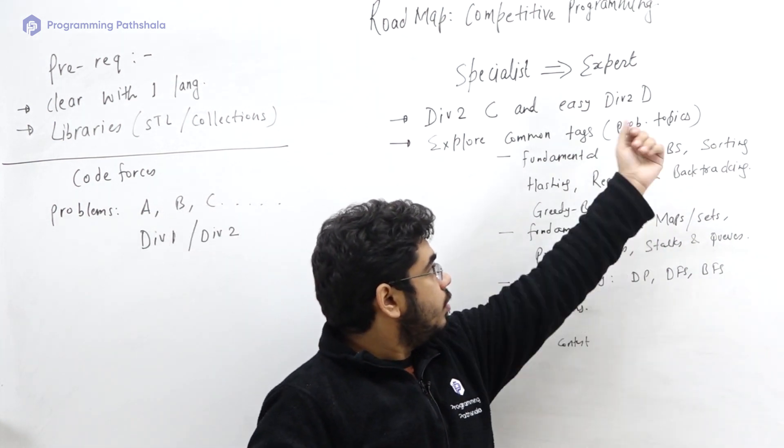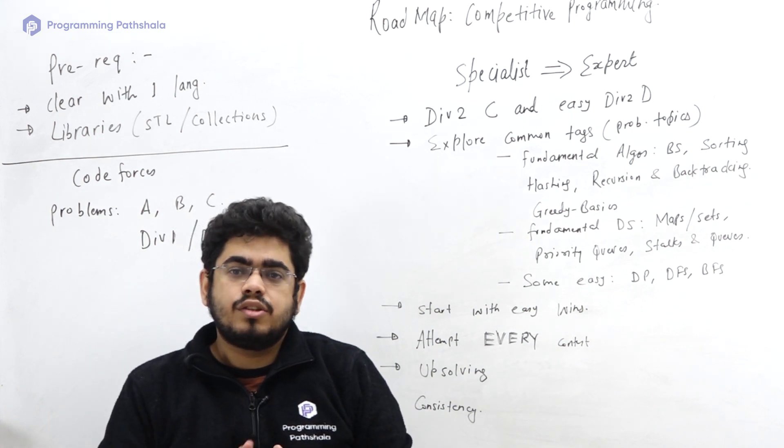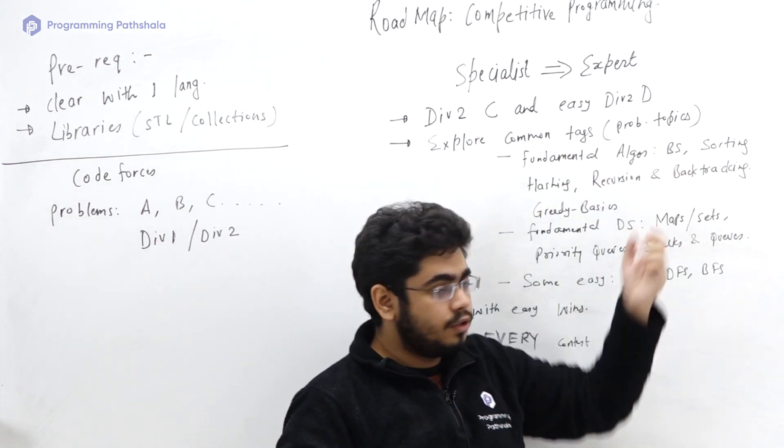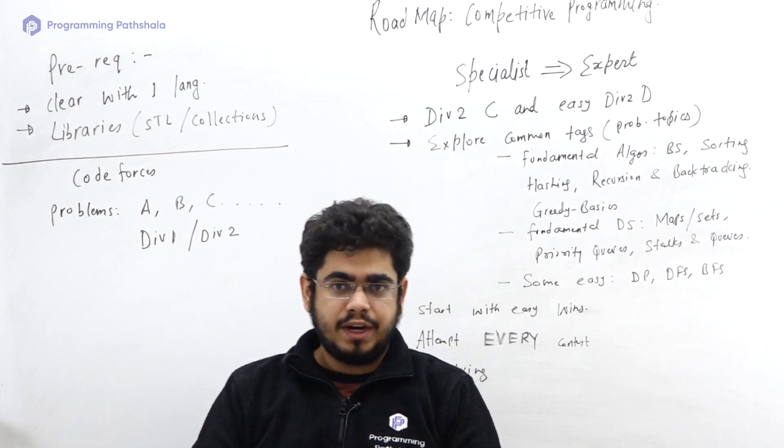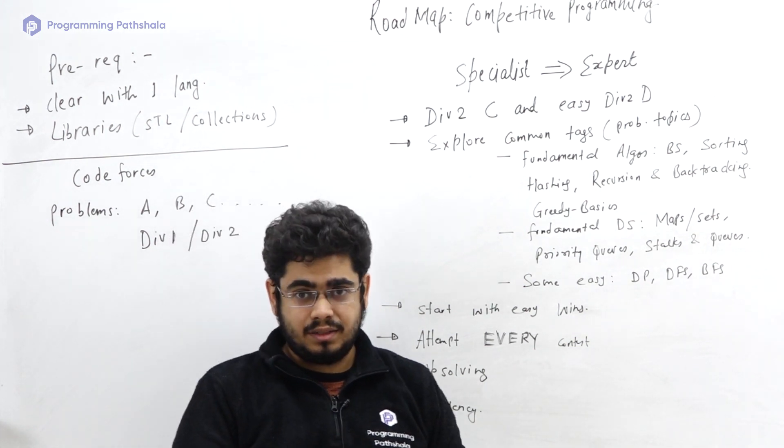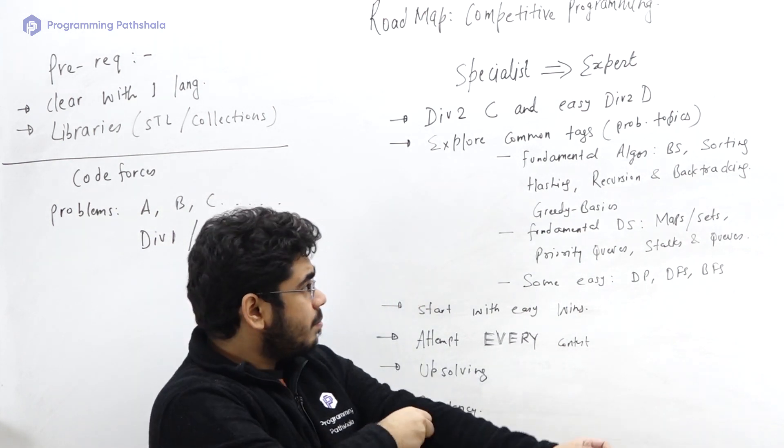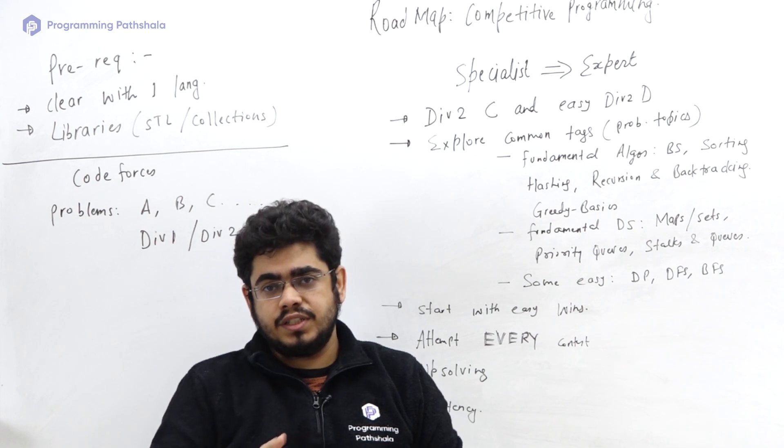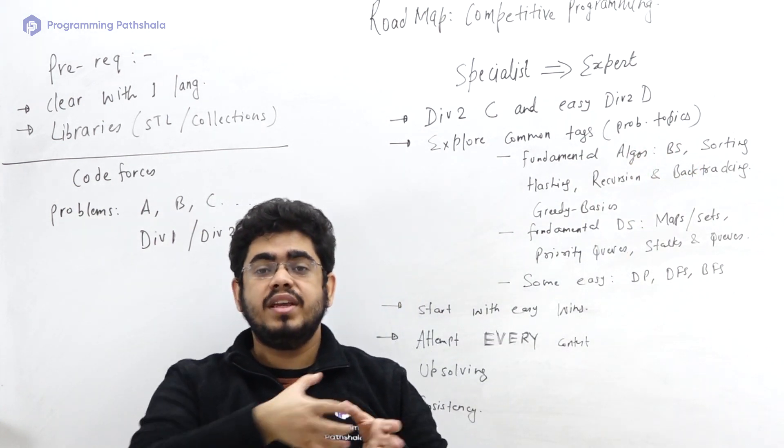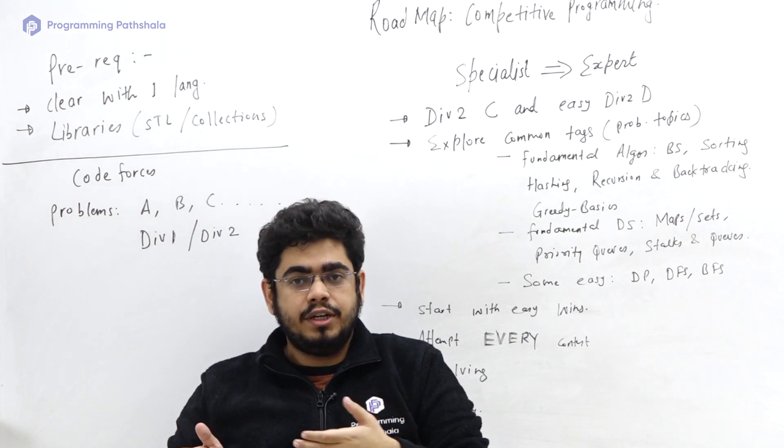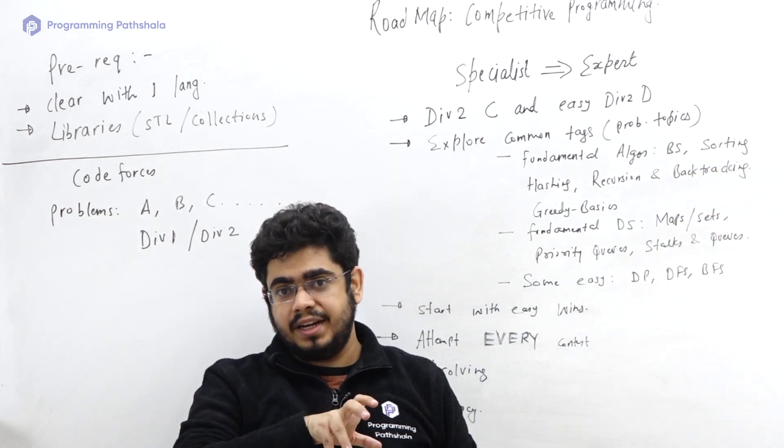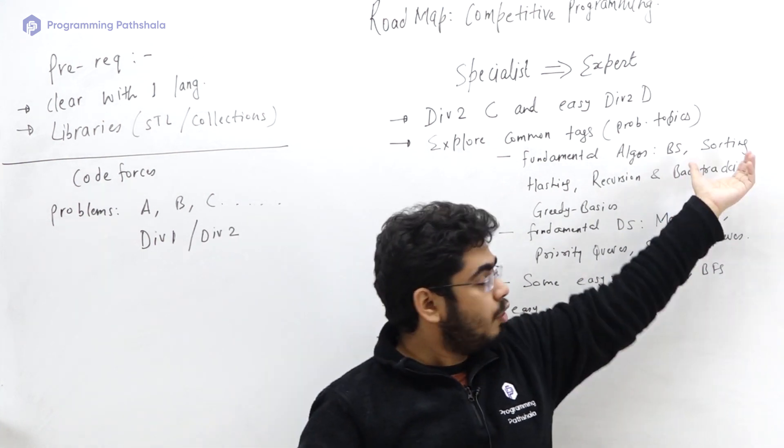Next question is, does just knowing what binary search is enough? Just knowing how to implement binary search on a sorted array, or what is binary search and why we use it - the answer is definitely no. There are a whole lot of problem categories in binary search, for example binary search on answer, ternary search, ternary search on answer, and some more complicated binary search stuff which is mixed with pre-computation techniques in arrays. Maybe you need to do prefix sum and then apply binary search. Similarly mixed with sorting, so maybe you need to sort the array on some criteria and then apply binary search.